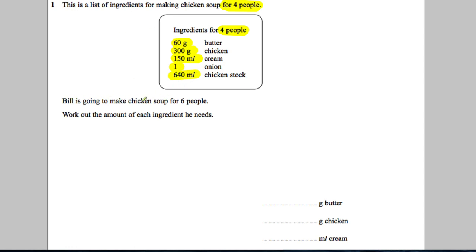Now the key thing here: Bill is going to make chicken soup for six people. Work out the amount of ingredients he needs.